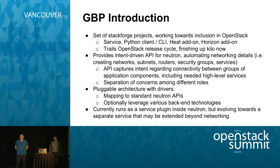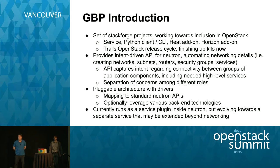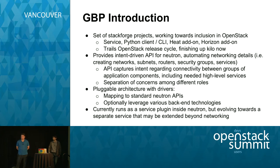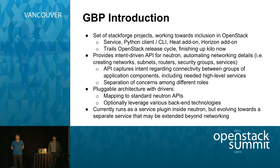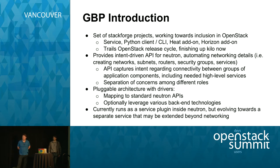The goal of group-based policy is to provide an intent-driven API currently for Neutron. This automates and hides a lot of low-level networking details that application developers and deployers generally don't need to worry about - things like creating networks, subnets, routers, security groups, configuring services. The group-based policy API is a set of RESTful resources intended to capture the intent. We're talking about connectivity between groups of application components. Within those groups you have policy targets that basically have Neutron ports - generally VMs are the members of those groups.